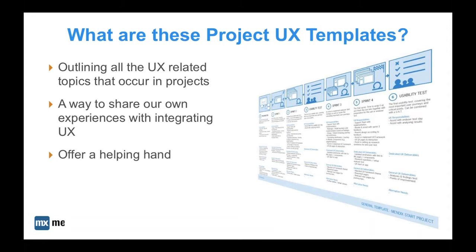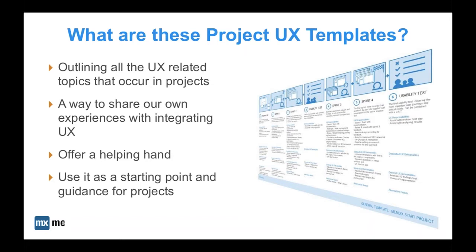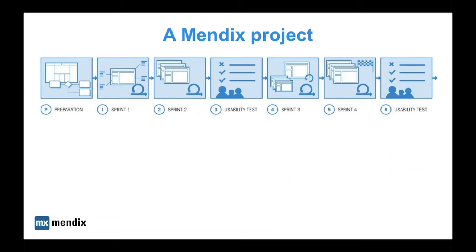For illustrative purposes we've taken a four-sprint-long project. If we zoom in on the timeline aspects of the templates, we can identify three distinct phases: the preparation phase, the sprinting phase, and lastly the usability testing phase. We'll go over these three phases in that order.